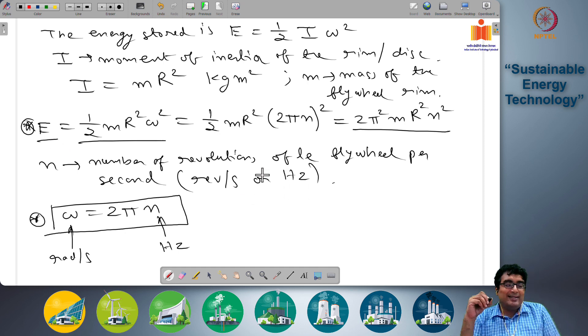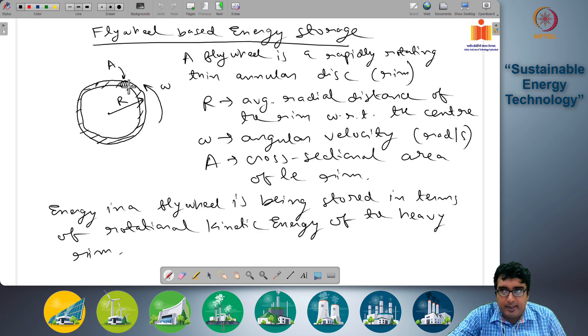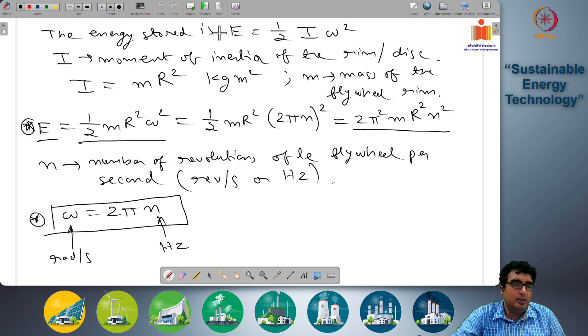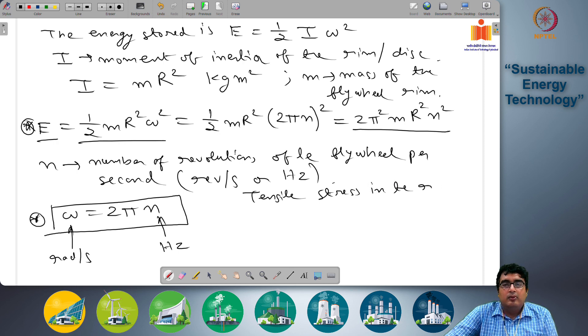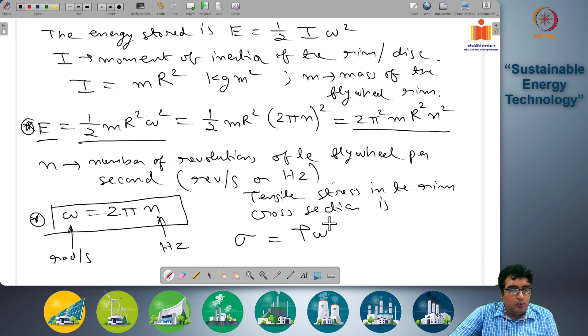Another important point is what is the tensile stress of the rim. In this cross sectional area, due to the rotational motion, centrifugal forces are acting and this is creating tensile stress on the cross sectional area of the rim. Tensile stress in the rim cross section is sigma equals to rho omega square r square where rho is the rim material density.